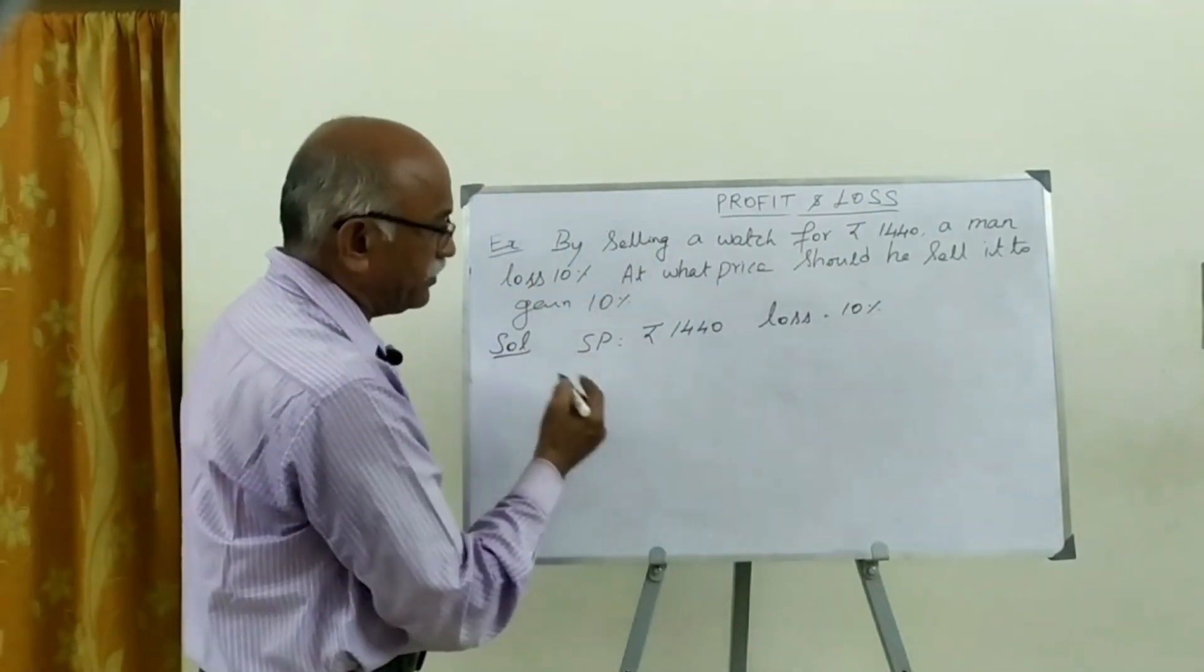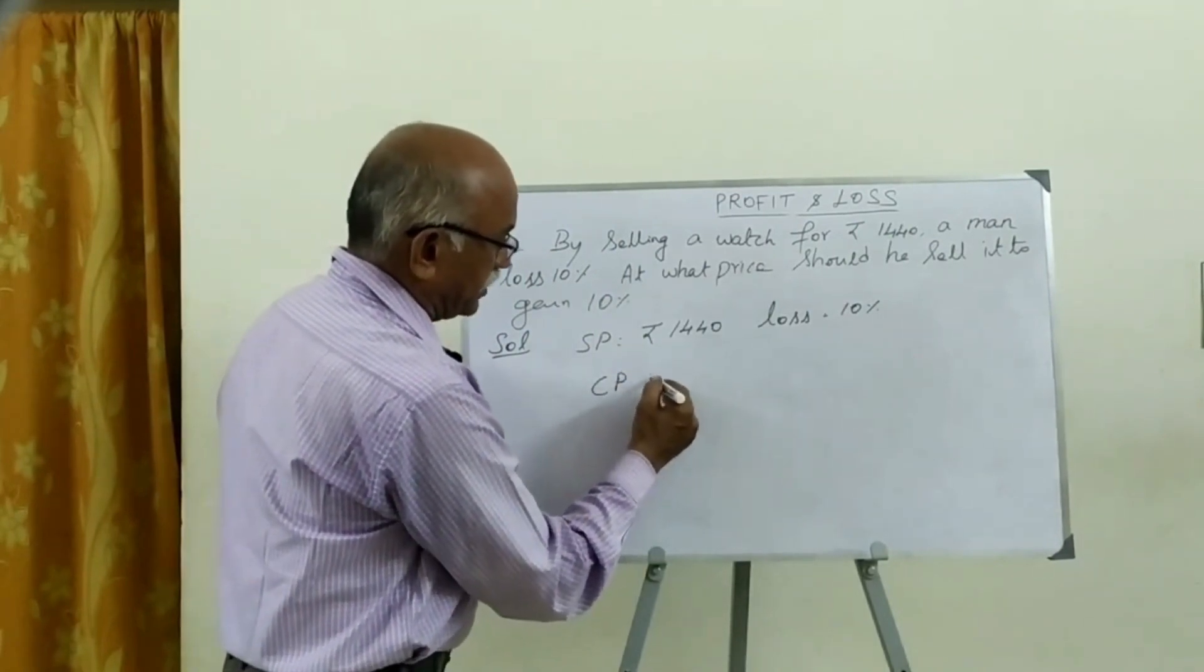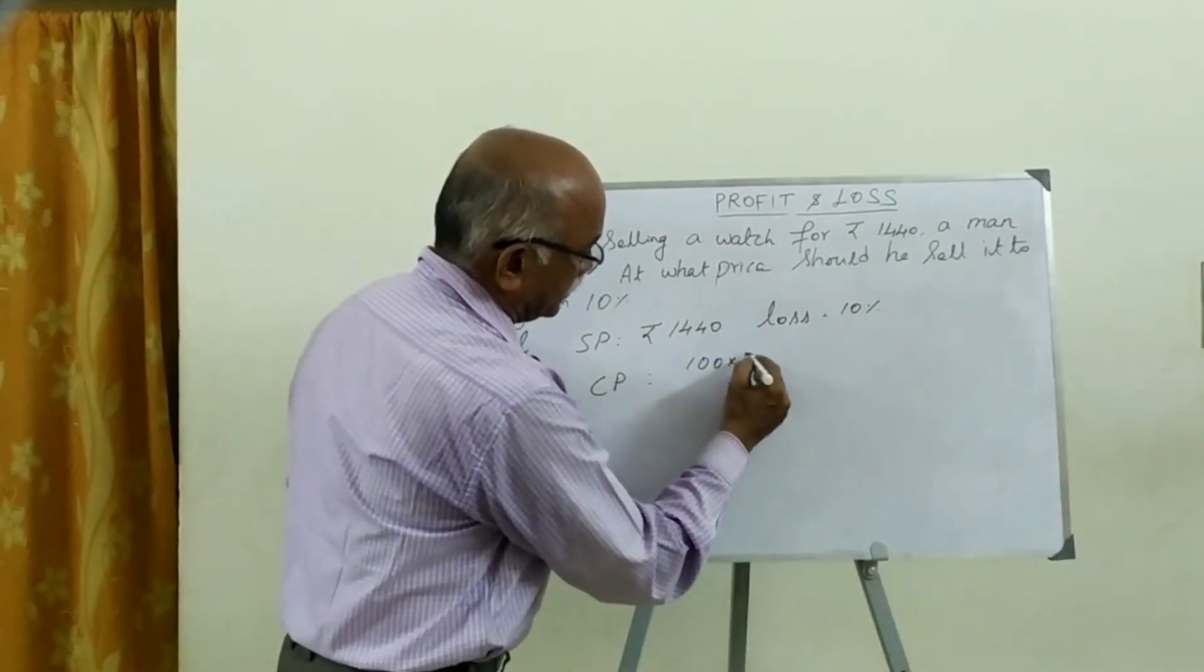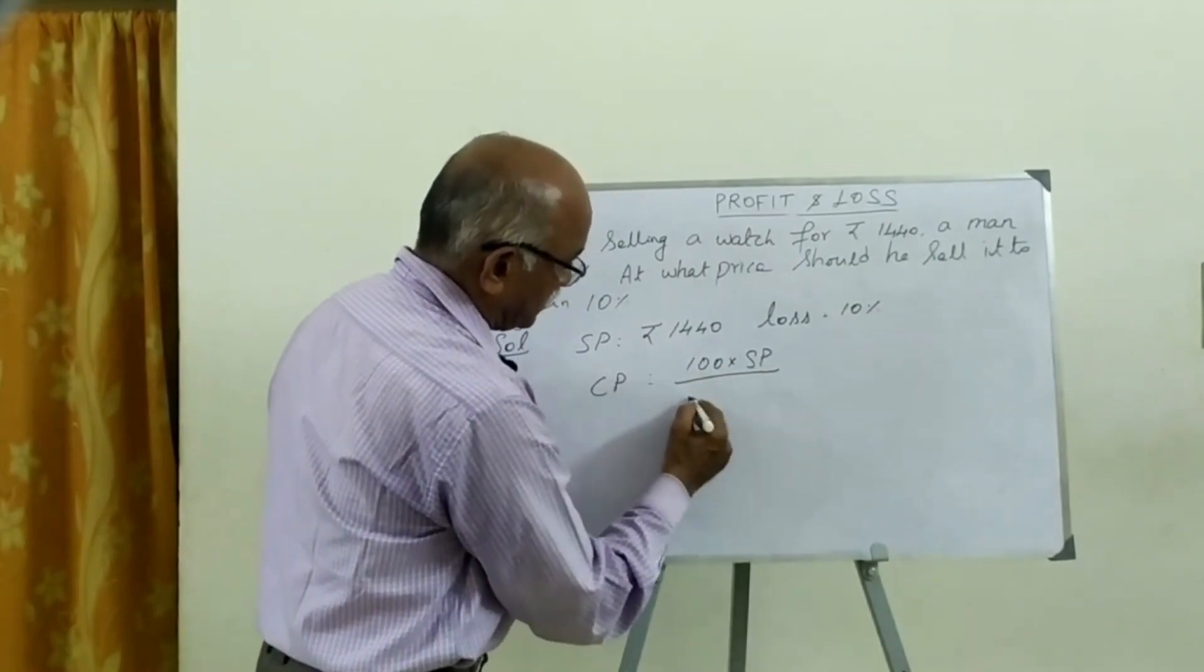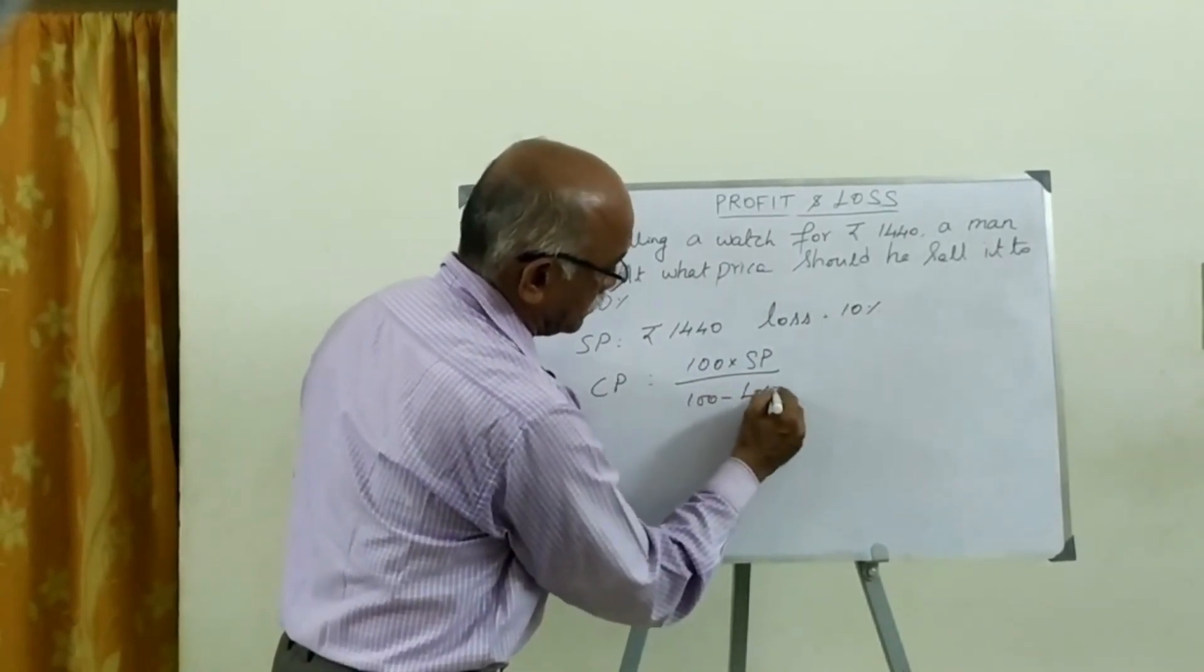The loss is equal to 10%. Now, what are we going to do? CP is going to do CP. CP is a formula.